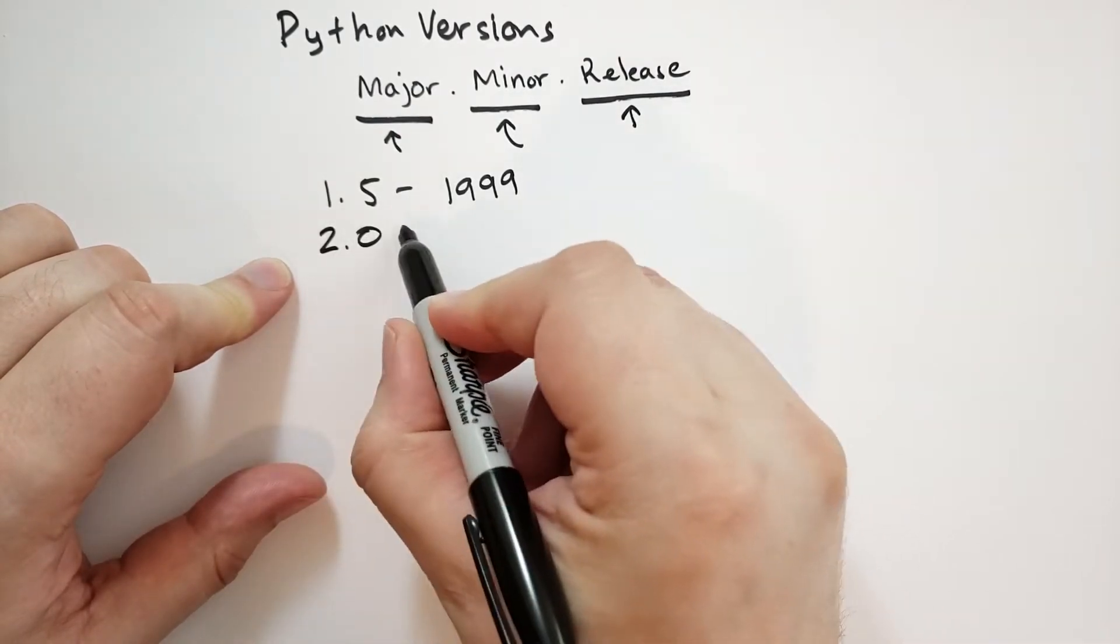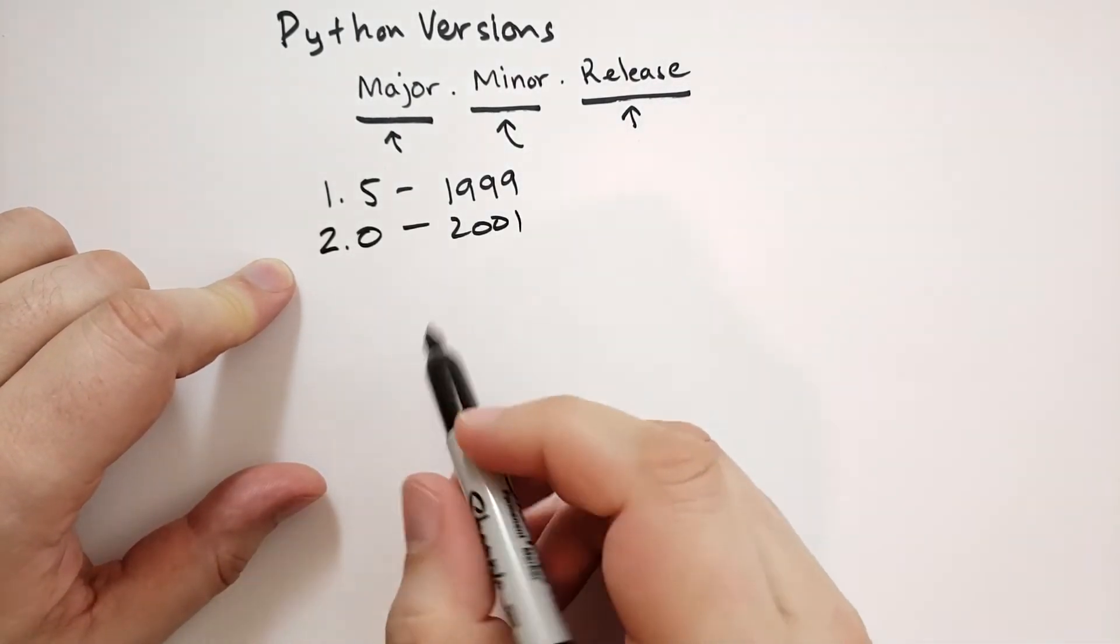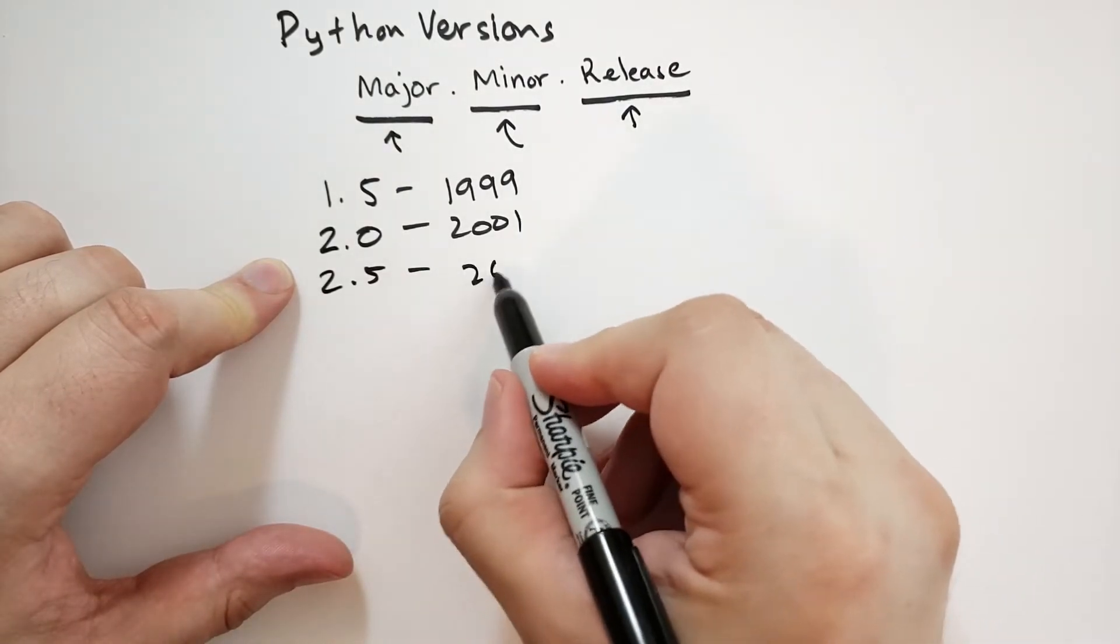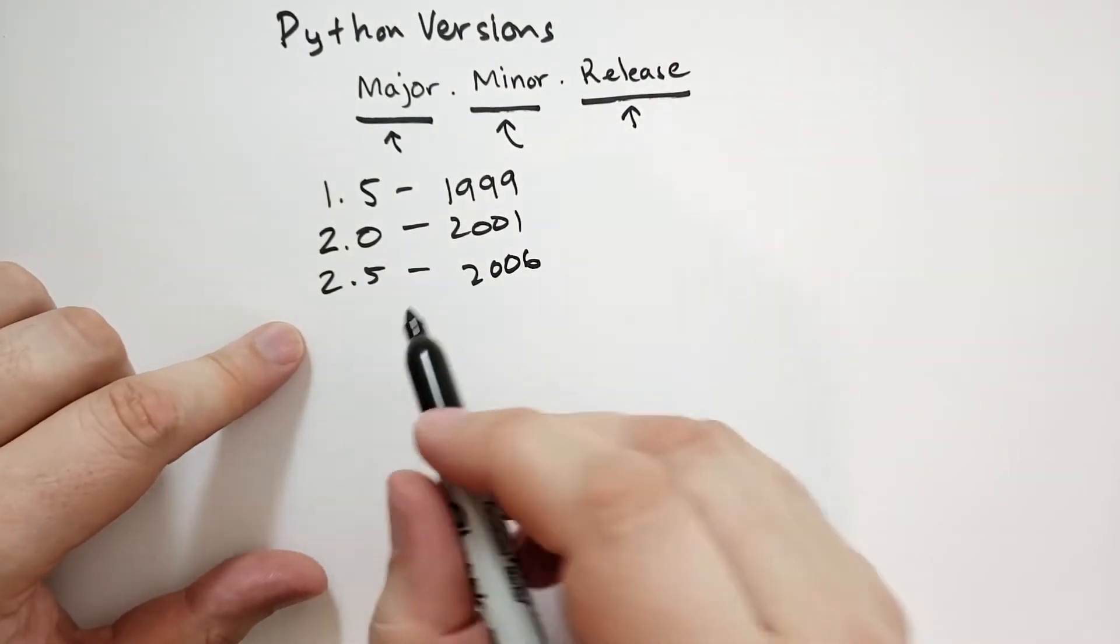2.0 came out not too long after that, in about 2001. 2.5, I remember this version, it was a pretty big deal in 2006. There was a lot of new features that came with 2.5.